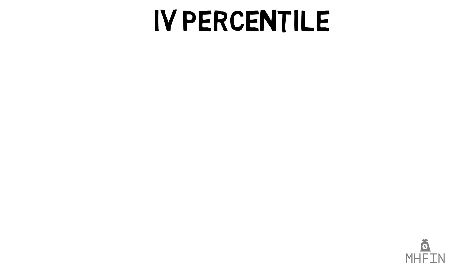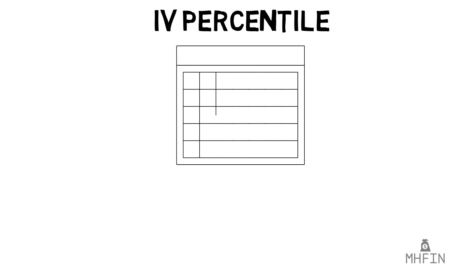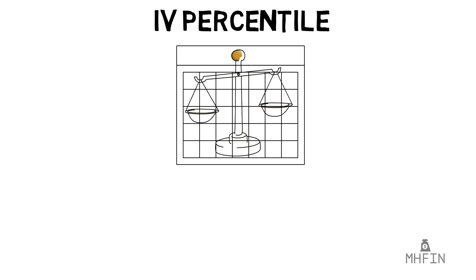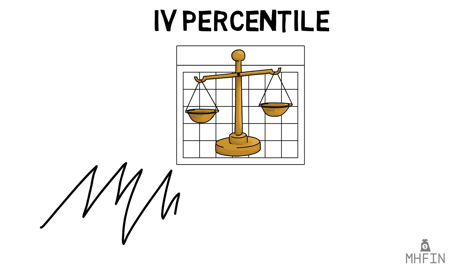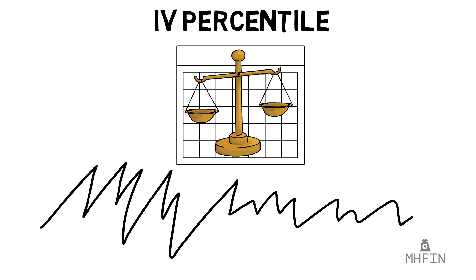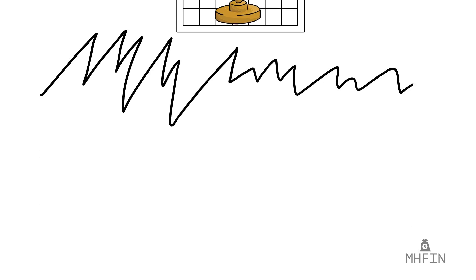This is why many traders elect to use IV percentile. This statistic weighs each day equally, significantly minimizing the effects of outliers. That same spike where IV jumped to 200% in one day still impacts the calculation, but it does so in a much smoother manner. IV percentile takes all the trading days in the past year and analyzes what percentage of those days IV was lower than the current level, providing a much clearer picture. It works in the same way with the range going from 0 to 100.